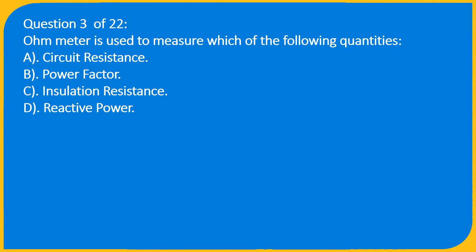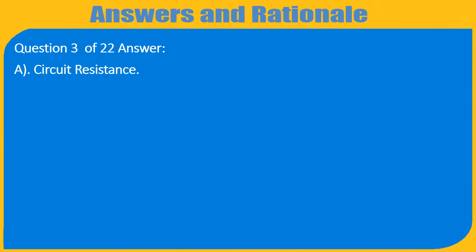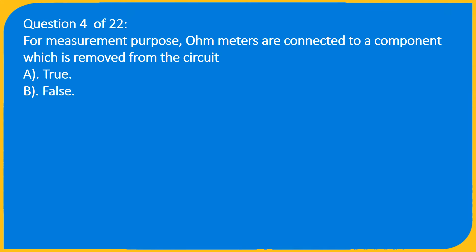Question 3 of 22: An ohmmeter is used to measure which of the following quantities? A. Circuit resistance, B. Power factor, C. Insulation resistance, D. Reactive power. Answer: A. Circuit resistance.